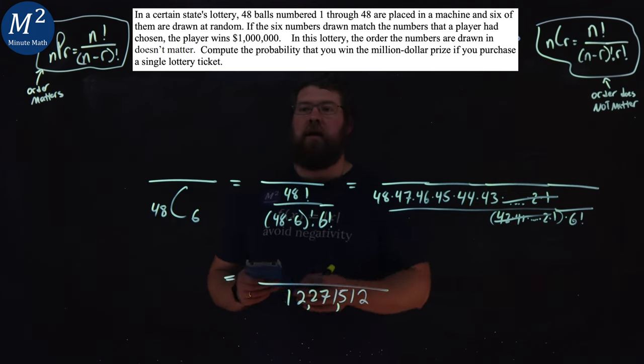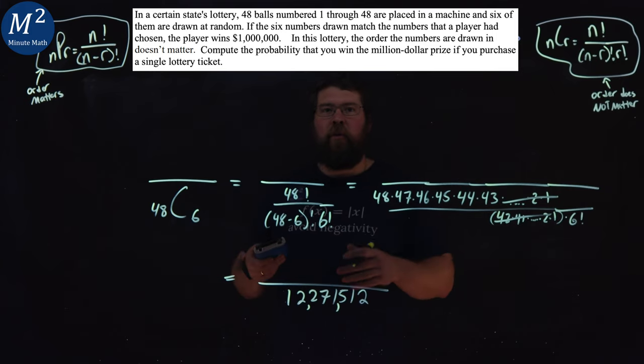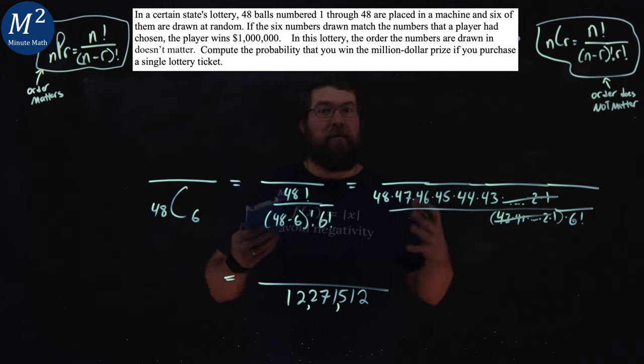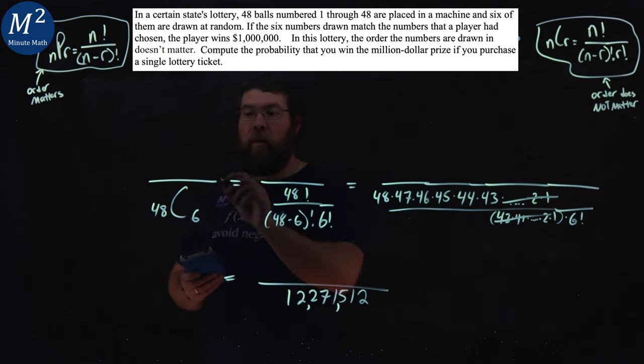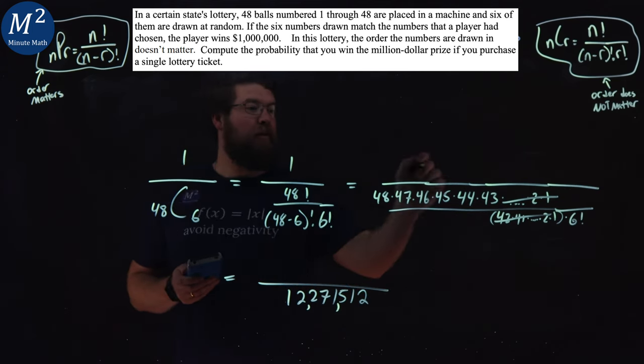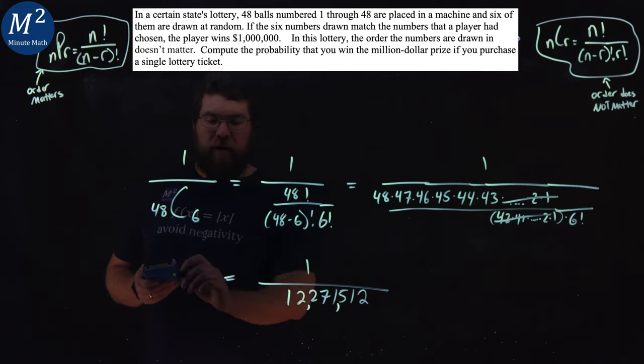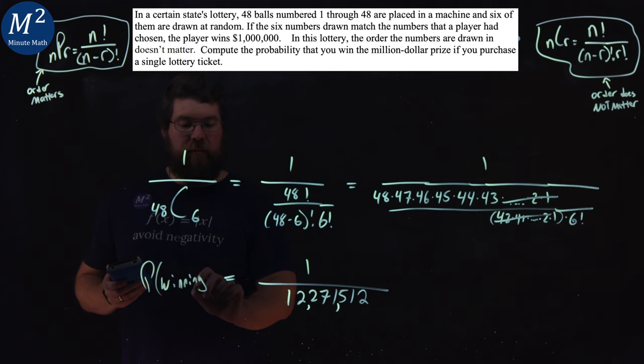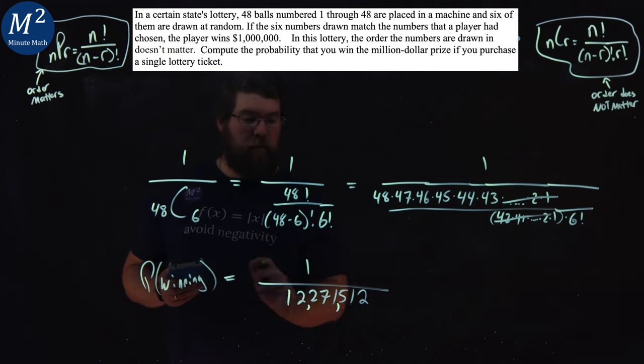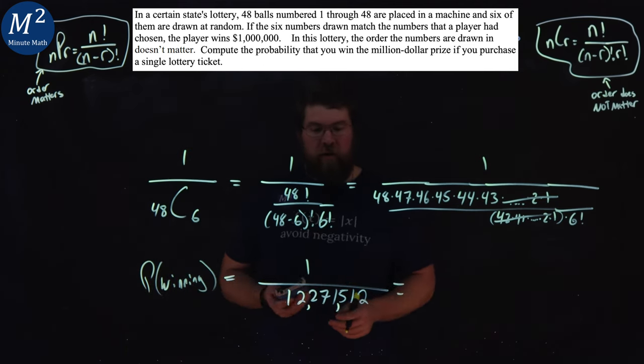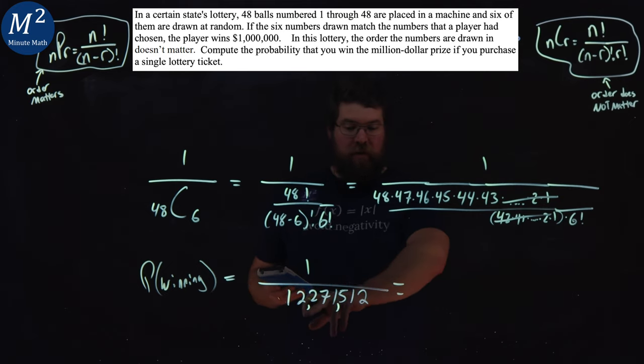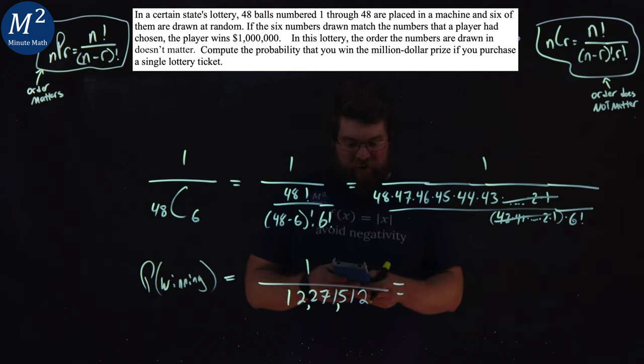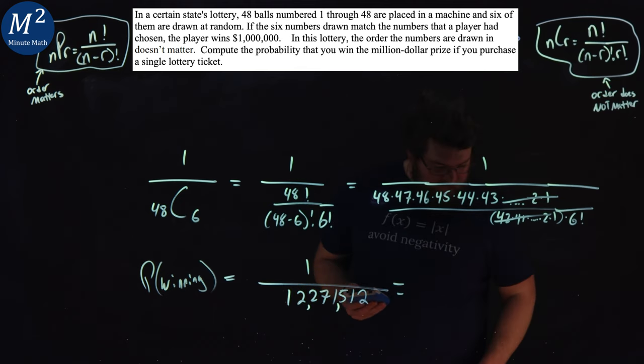Now the numerator here, we're only buying one ticket. So you only get one ticket, one set of numbers that don't repeat. There's only one there for that across the board. And so our probability of winning, for one ticket, your probability of winning is 1 over 12,271,512.